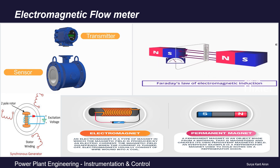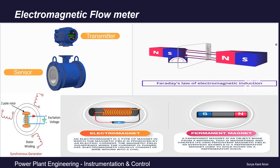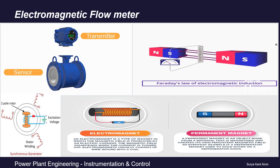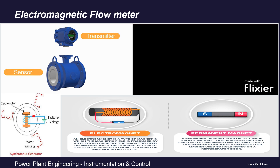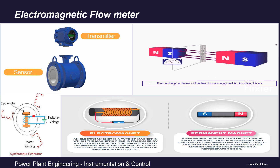These flow meters are based on Faraday's law of electromagnetic induction. Consider two magnets placed such that the south pole of one faces the north pole of the other, generating a magnetic field between them. A conductor moving in and out perpendicular to this magnetic field will, when connected to a voltmeter, show a voltage deflection as it moves in and out of the field. Based on this same principle, synchronous generators and DC motors also work. So this works only when a conductor moves through a magnetic field.